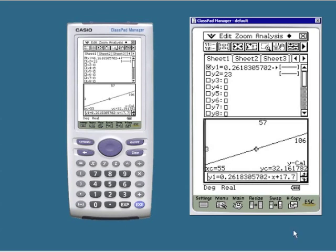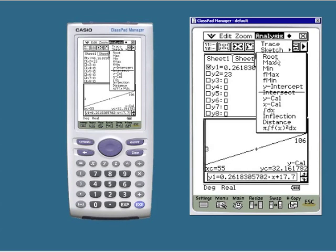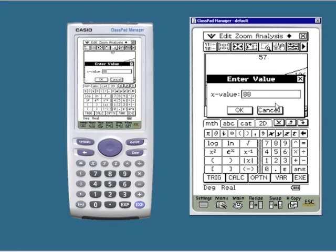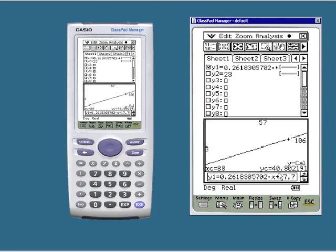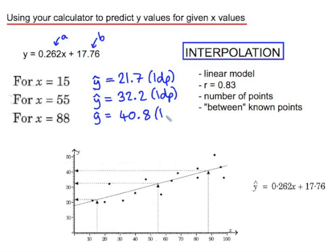And then analysis, g solve, y cal, 88 returns a value of 40.8 to one decimal place.